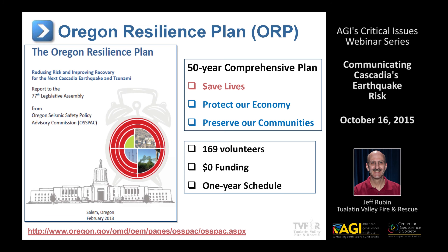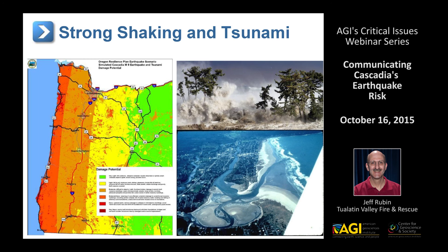The report was issued after a one-year process. You can see on the right almost 170 volunteers, a budget of exactly zero, one year to get it done. We had nine working groups covering water, wastewater, power, communications, transportation, and others, based on a single scenario.